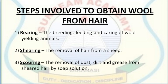The first step is rearing — the process of breeding, feeding and caring for wool-yielding animals. In our country, sheep are reared mainly for wool in areas with low rainfall, including the hills of Jammu and Kashmir, Himachal Pradesh, Uttarakhand, Arunachal Pradesh and Sikkim. Sheep have a lifespan of about 10 to 12 years and eat grass and leaves.